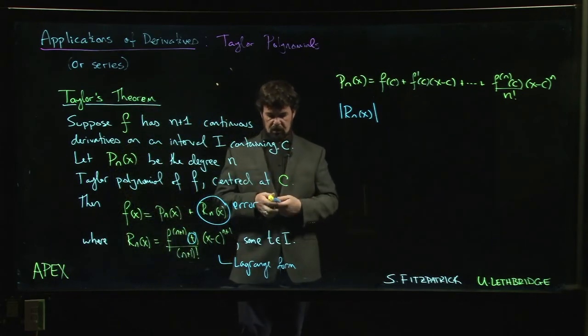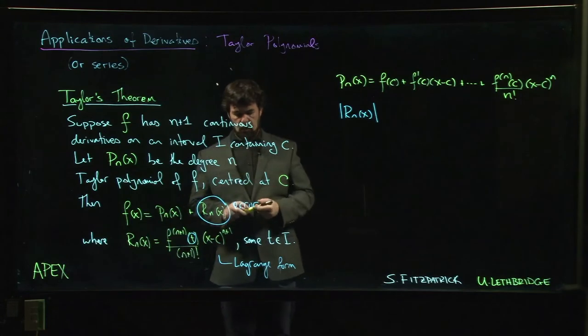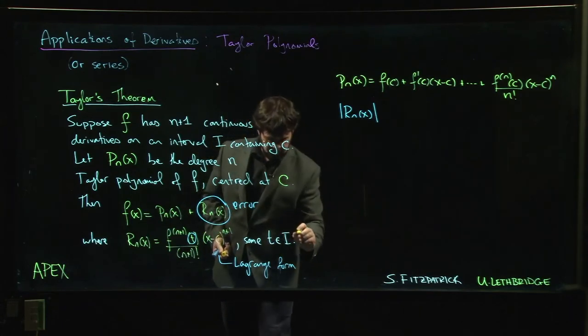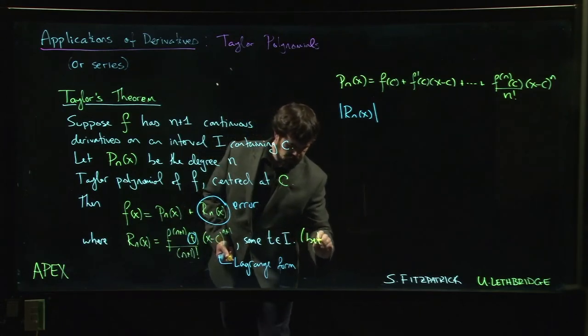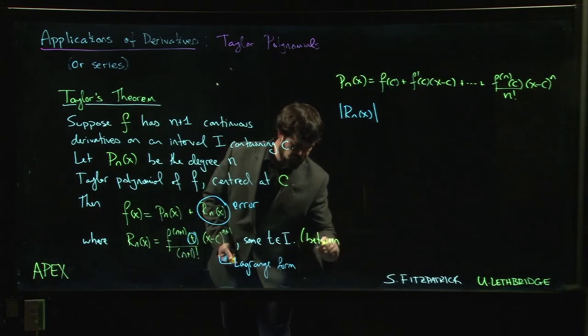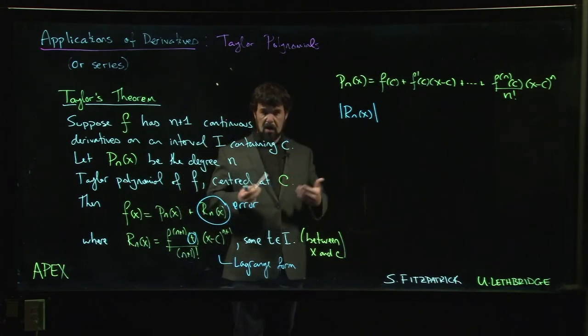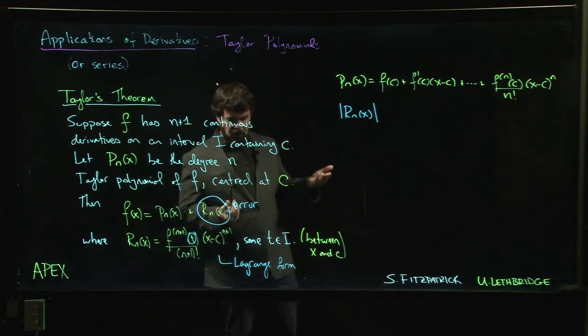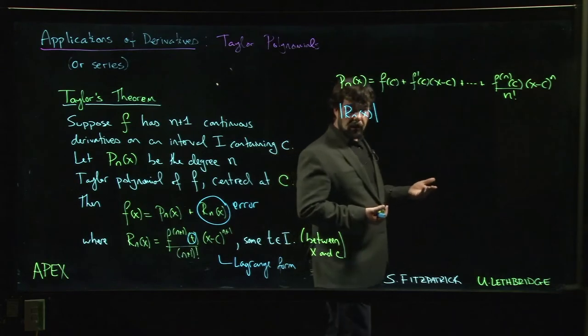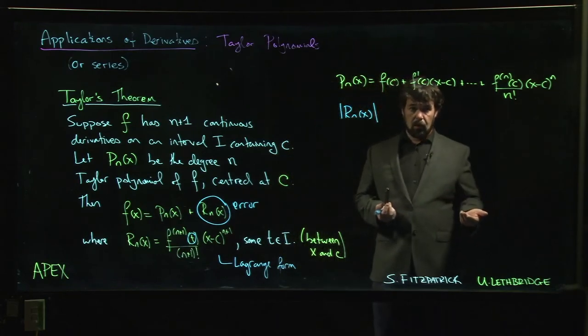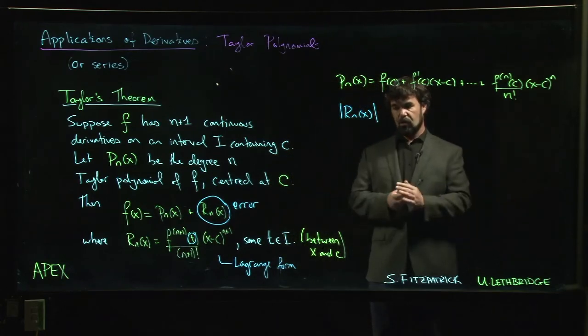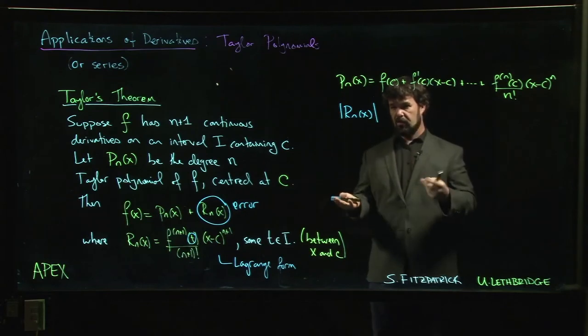This t here, all we know about t is that it's in this interval that we're working on. Actually you can say a little bit more - it's between x and C somewhere in between those two values. Typical mean value theorem argument: you know that this number exists, but you don't know what it is. You know roughly where it's located but you don't know it exactly.